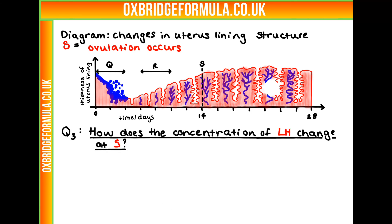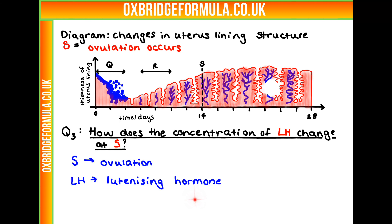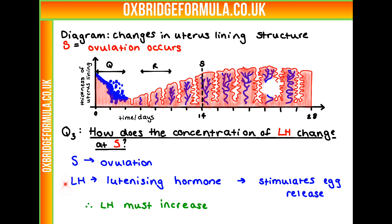Our final question is how does the concentration of LH change at S? S is here — we know that's when ovulation occurs, so S is our ovulation point. What does LH do? It's the luteinizing hormone, and it plays a very special role: it is involved in stimulating the release of the egg. So for ovulation — stimulating release of the egg — LH must increase. We must have LH to produce ovulation, so therefore its concentration must increase.